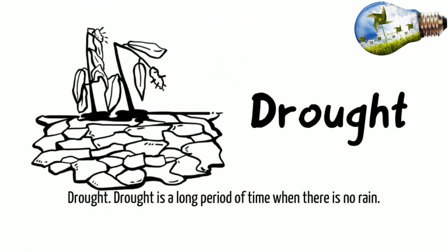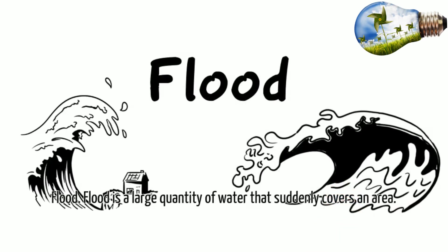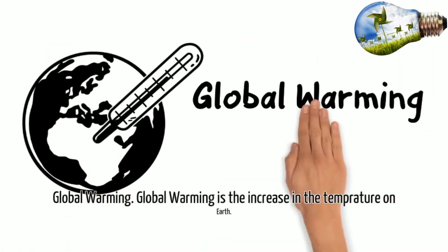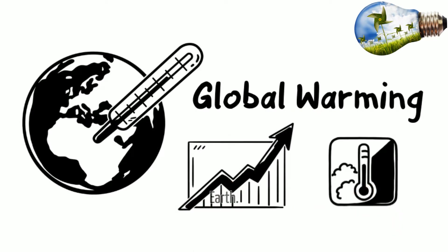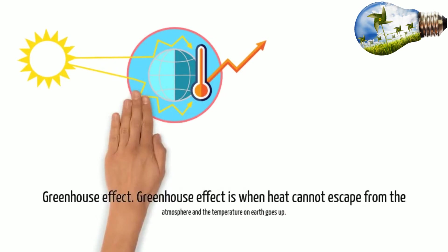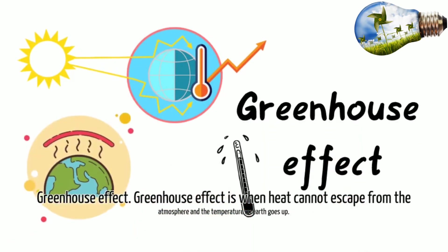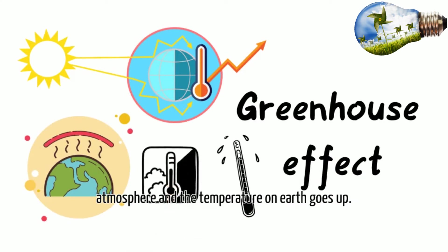Drought. Drought is a long period of time when there is no rain. Flood. Flood is a large quantity of water that suddenly covers an area. Global warming. Global warming is the increase in the temperature on Earth. Greenhouse effect. Greenhouse effect is when heat cannot escape from the atmosphere and the temperature on Earth goes up.